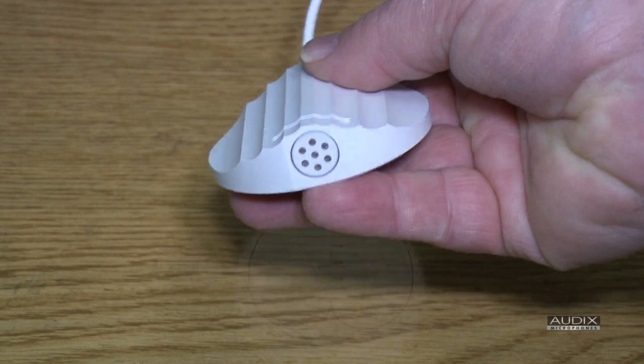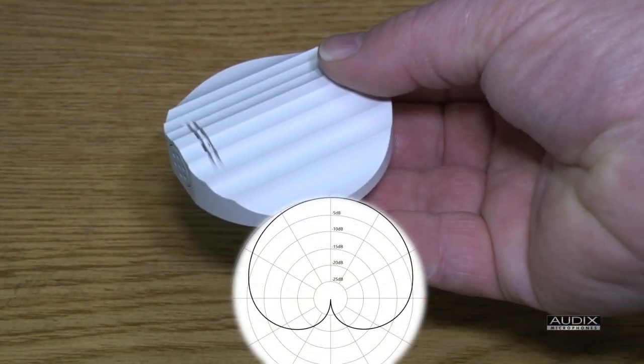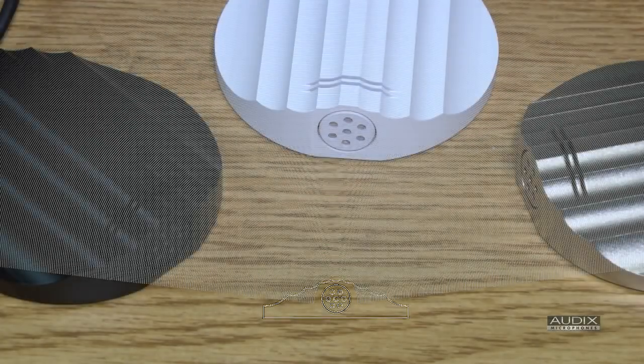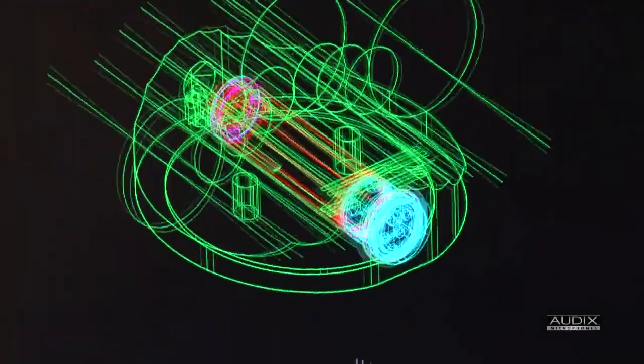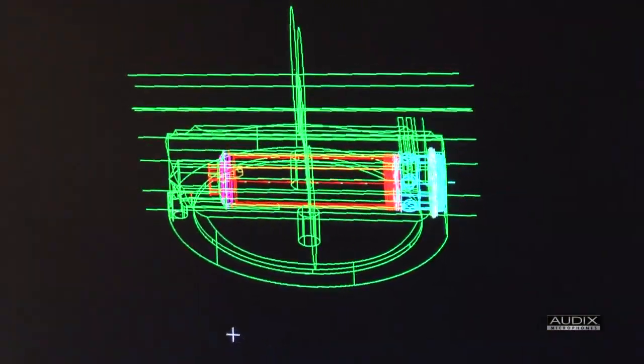The microphone element is cardioid by design, however, it produces a hemi-cardioid polar pattern when placed on a flat surface such as a table, floor, wall, or podium. The M60 is optimized for speech and employs proprietary low-noise circuitry.